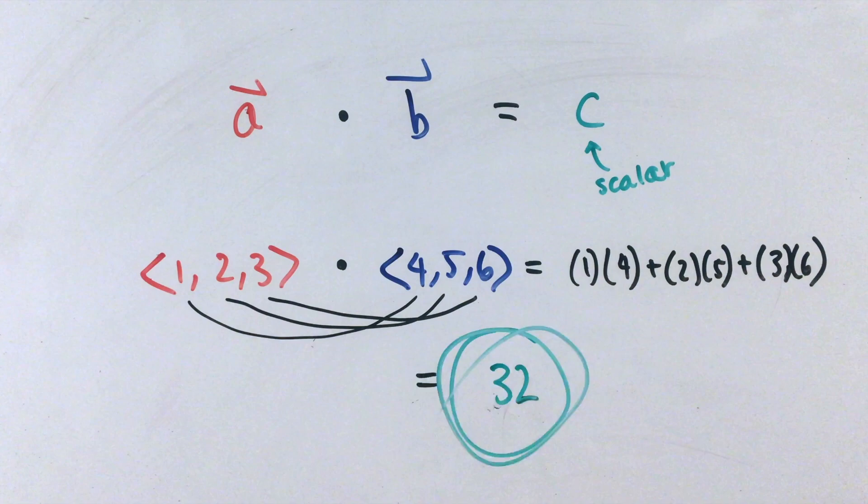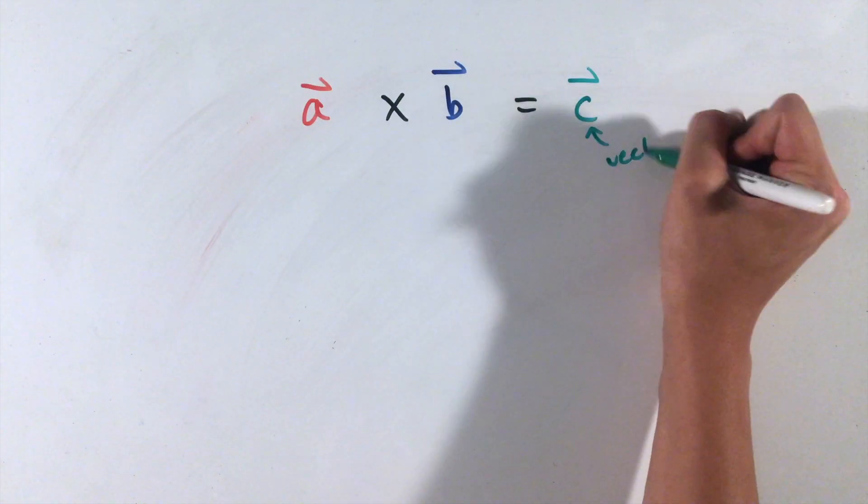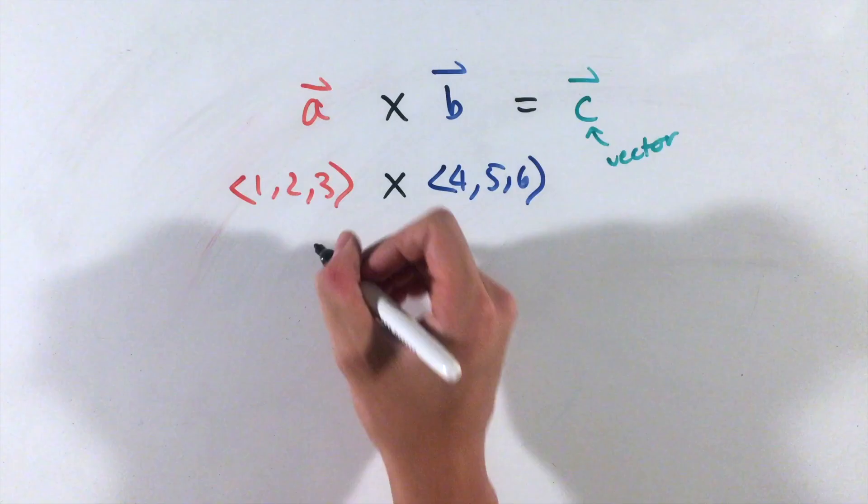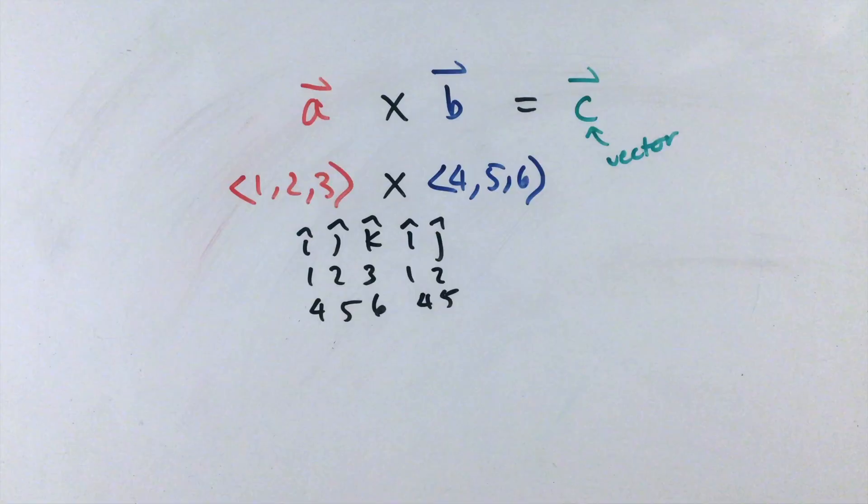In contrast, the cross product of two vectors finds a vector that is orthogonal or perpendicular to both of them. While there's many ways to cross two vectors, in three dimensions, I like to write our unit vectors i, j, k, the first vector, then the second vector, then copy the first two columns to the right side.